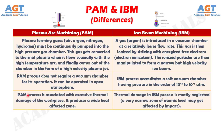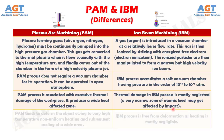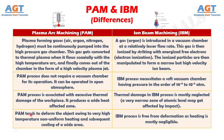Number 8: plasma arc machining process is associated with excessive thermal damage of the workpiece — it produces a wide heat affected zone. Whereas thermal damage in iron beam machining process is mostly neglected; only a very narrow zone at the atomic level may get affected by impact. Number 9: plasma arc machining tends to deform the object owing to very high temperature, non-uniform heating, and subsequent cooling of a wide area, whereas iron beam machining process is free from deformation as heating is mostly negligible.